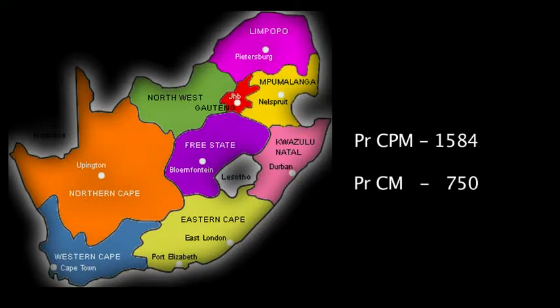For the PRCPM — the professional construction project manager — the total of registered persons is 1,584 and is continually growing. The professional construction manager is sitting at 750 and is continually growing. However, council has a concern because it's not really reflecting what is happening out in practice. As a result, council has taken a proactive step to organize a summit called 'Where Have All the Construction Managers Gone?' and is doing this with a whole lot of stakeholders. The professional construction manager is now recognized in the new construction regulations by the Department of Labour, which has adopted the definition of construction manager from the SACPCMP.